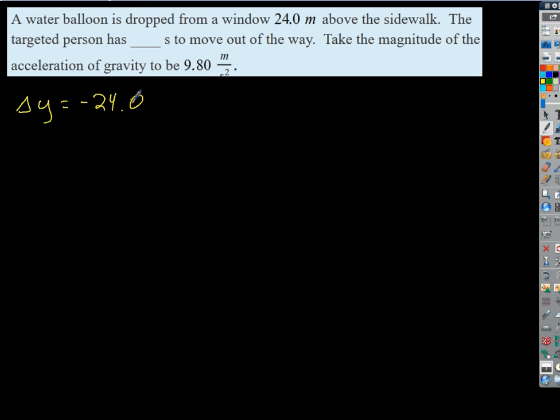Okay, so negative 24 is the displacement. What else do we know? Gravity. Gravity. So acceleration is negative 9.80. One other thing is implied. Initial velocity is zero. There we go. And we're looking for time.